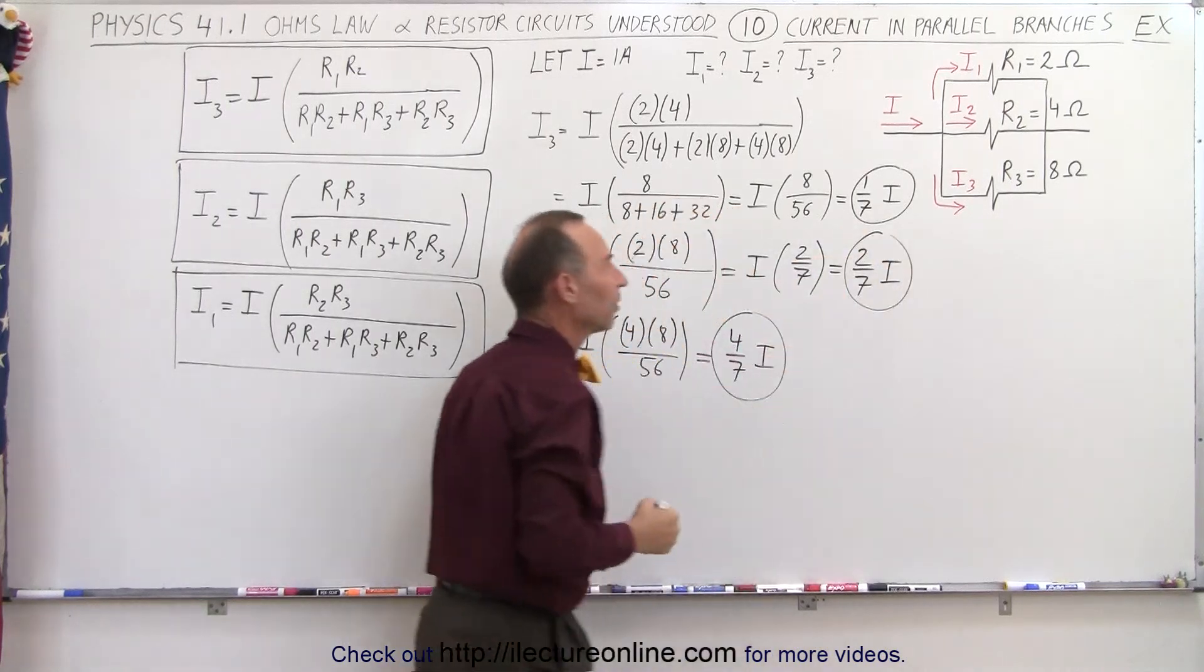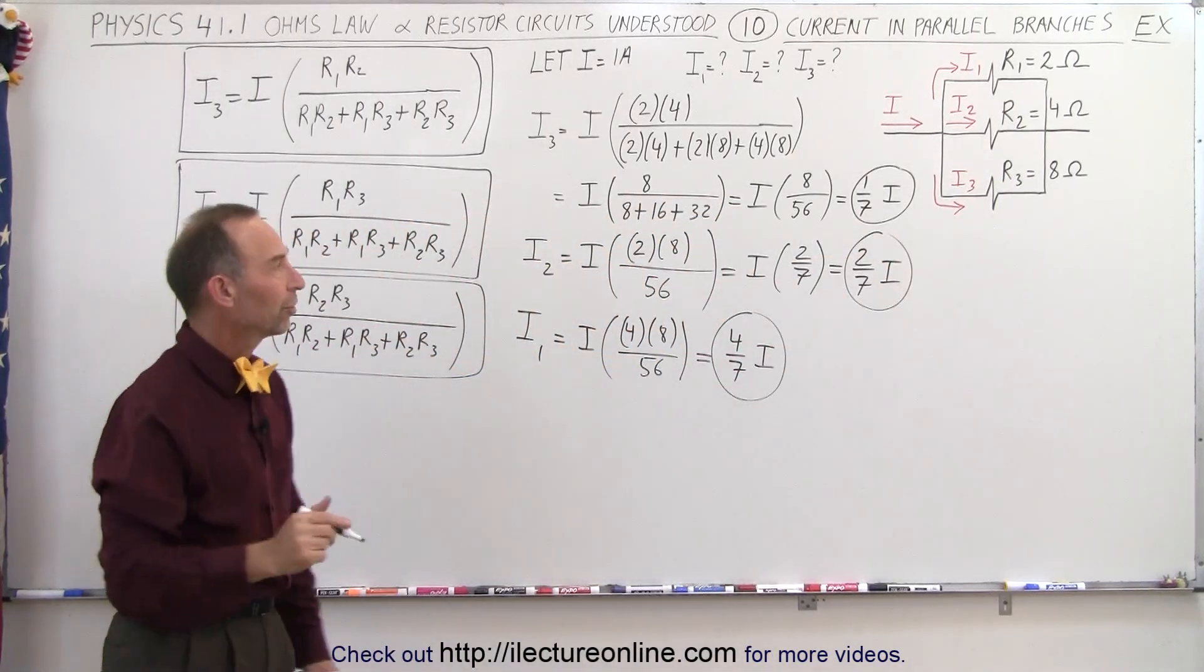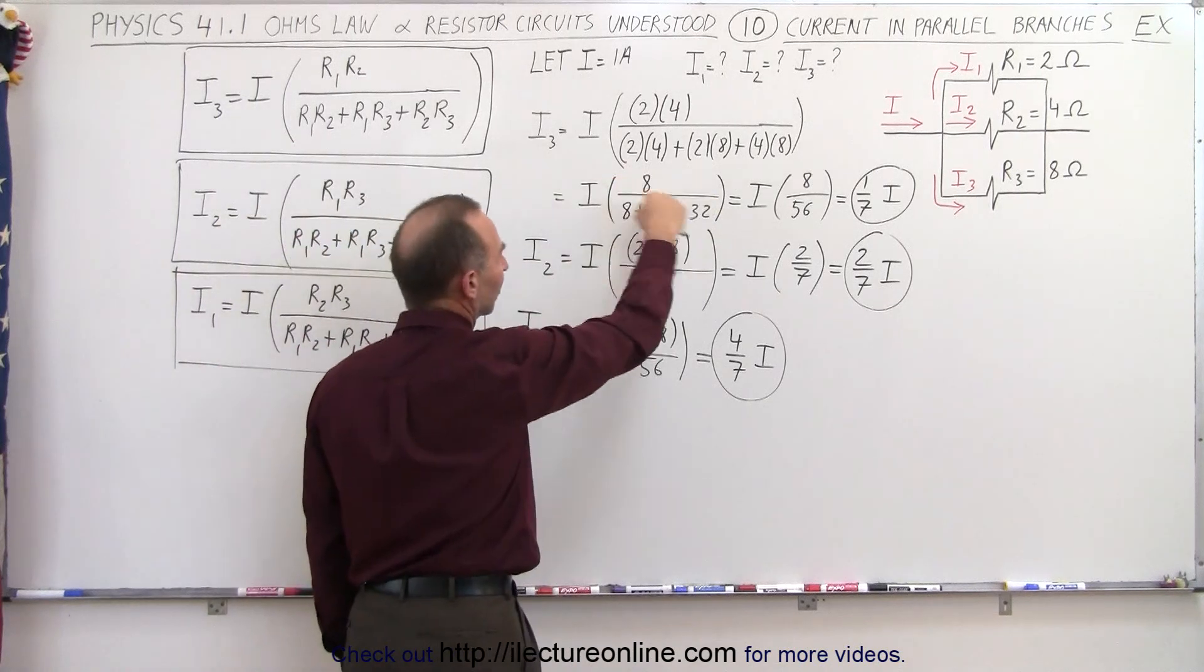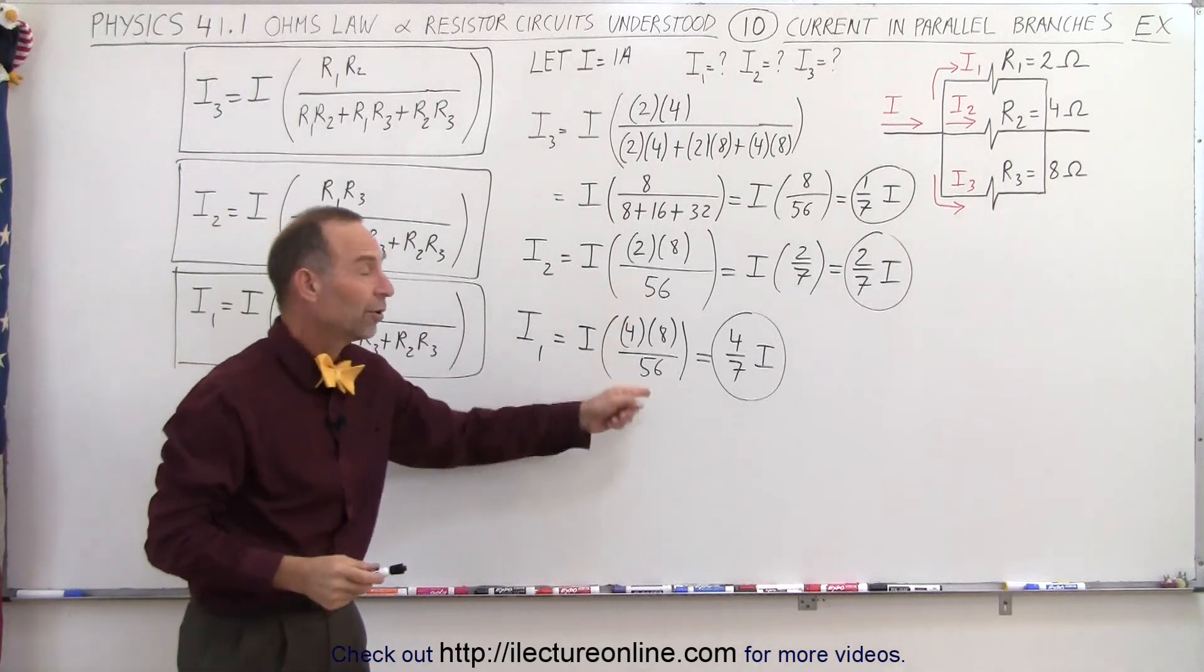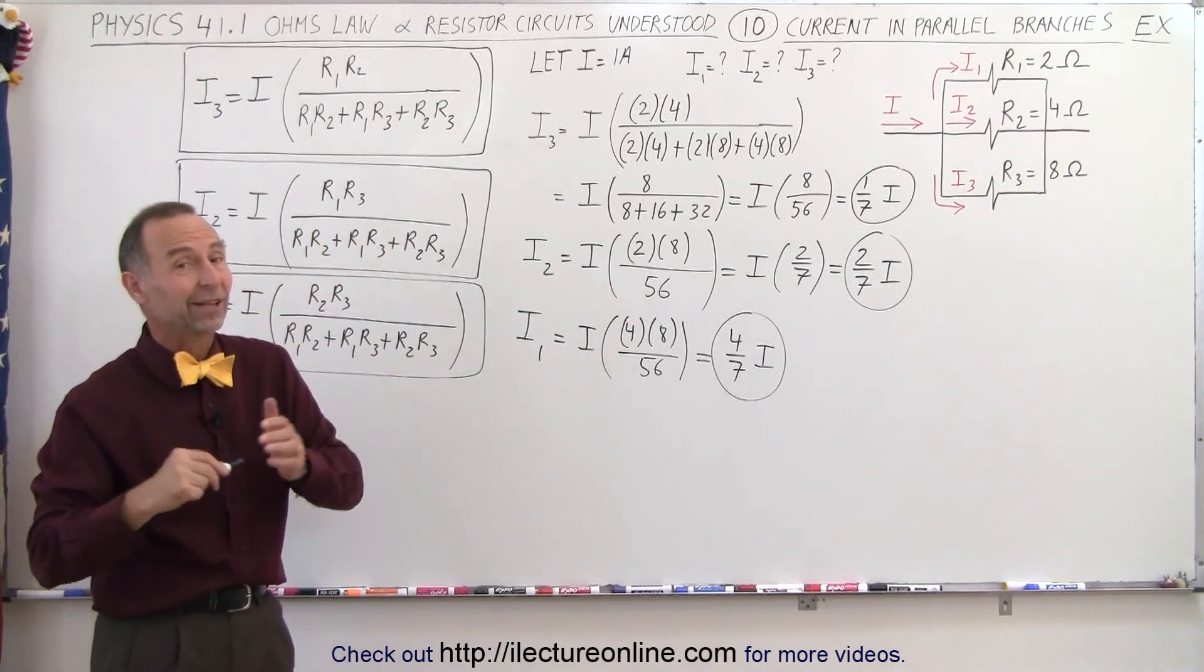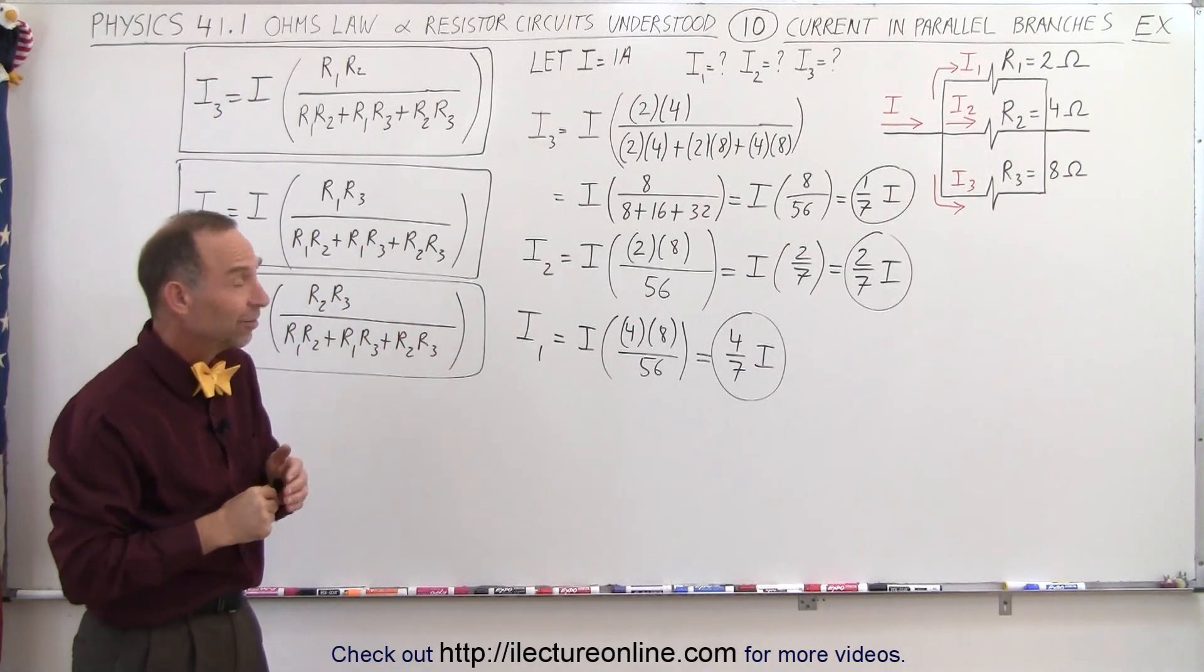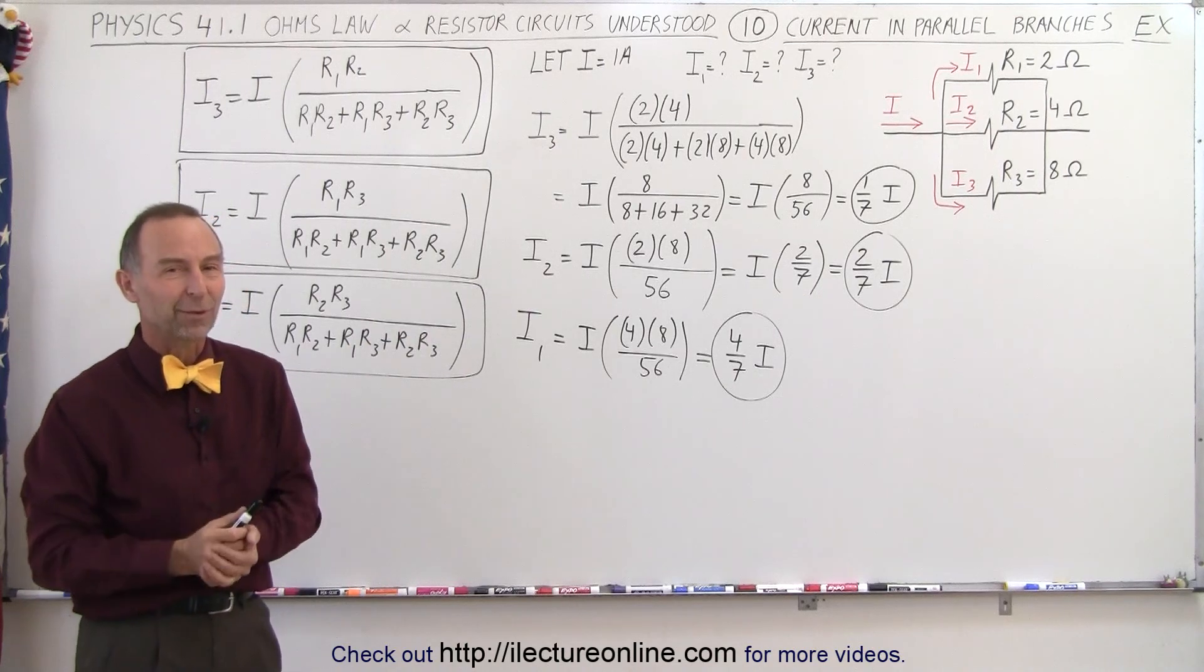So these are the three currents in the three branches. Notice, once you calculate it for the first branch, it's a lot easier to do it for the second and third branch, because you already know what the denominator is equal to. So it's not that difficult of a method, and it's actually quite quick. That's how it's done.